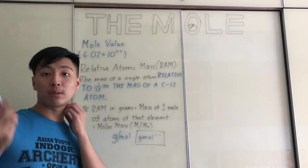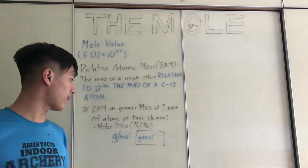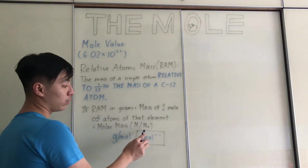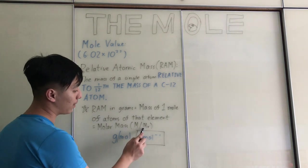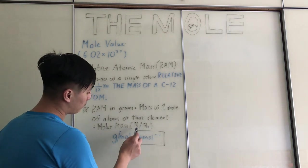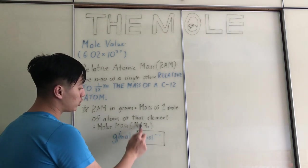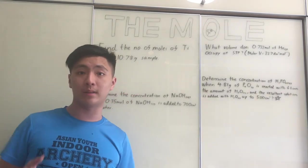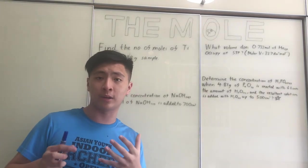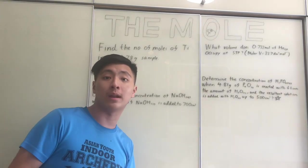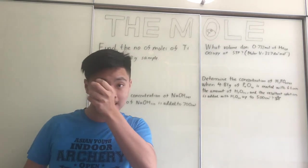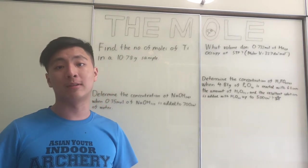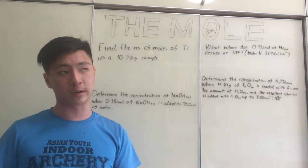The denotation for molar mass is large M, or you could use large M with a small r — but I prefer large M by itself. Now that we've covered the concept of the mole value and relative atomic mass, we're going to quickly recap how to apply these to different questions.